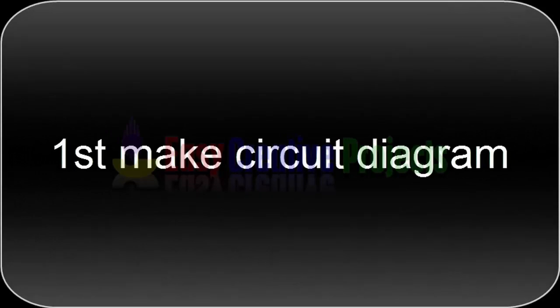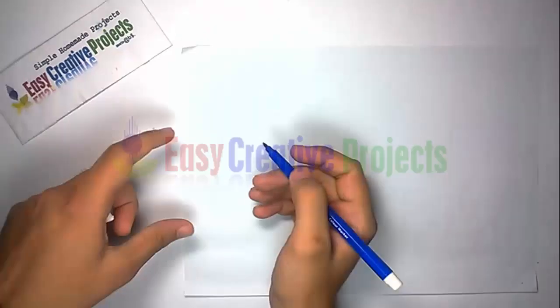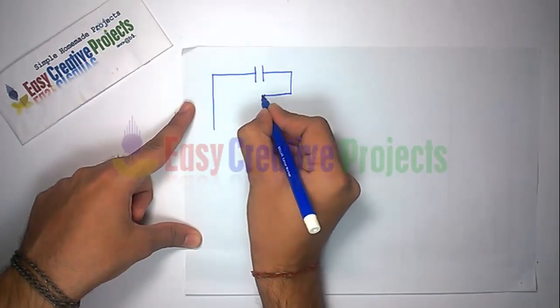First make circuit diagram. Connect 400 volt capacitor with 1M resistor.